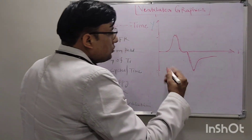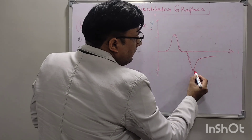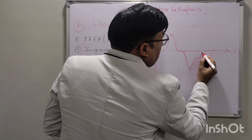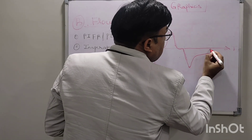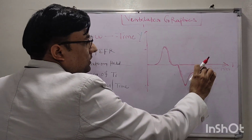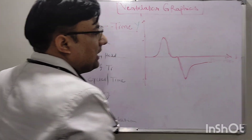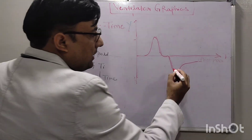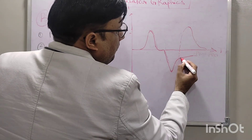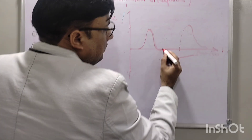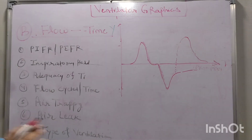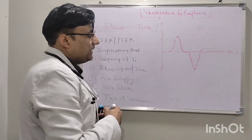We can also see air trapping or auto-PEEP in this graphic. The expiratory flow should return to the baseline, but if air trapping or auto-PEEP is present, the expiratory flow will not reach the baseline. The amount it fails to reach the baseline indicates the degree of auto-PEEP. In the actual ventilator graphic, the next breath cycle starts before the expiratory flow returns to the baseline — this is auto-PEEP.